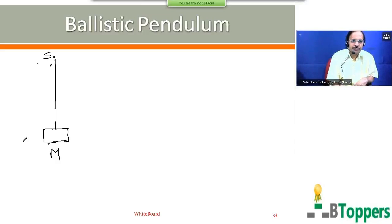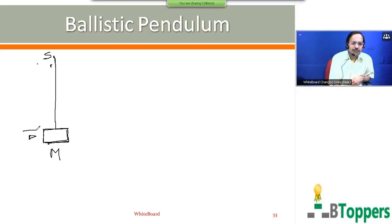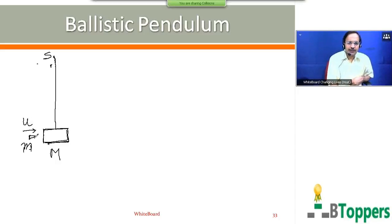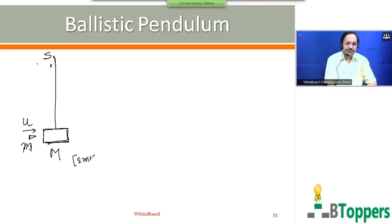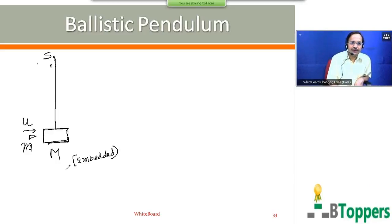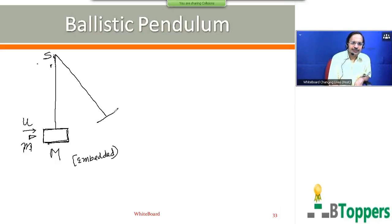Let S be the point of suspension. Let small m denote the mass of the bullet which is fired horizontally into the block. U is the magnitude of the velocity of the bullet just before it strikes the block. Let us suppose the size of the block is large enough so that the bullet gets embedded into the block after the collision.